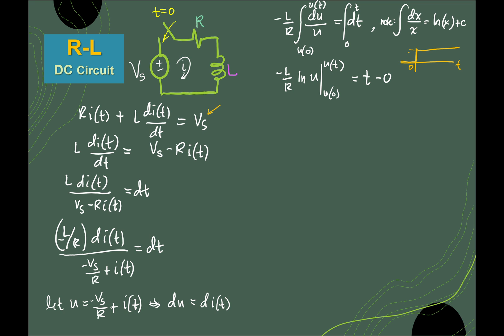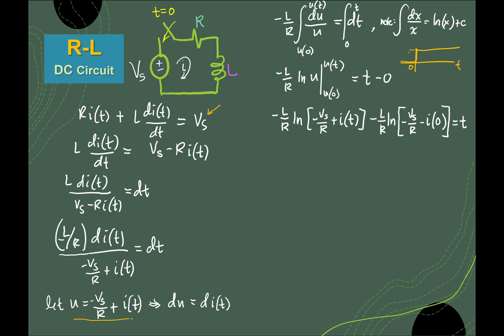Evaluating the mathematical expression, we have ln of u from u(0) to u(t). Substituting back the original value for u — that is, negative Vs/R plus i(t) — and on the next term, u(0) with i(0) instead of i(t), you still have negative Vs/R.